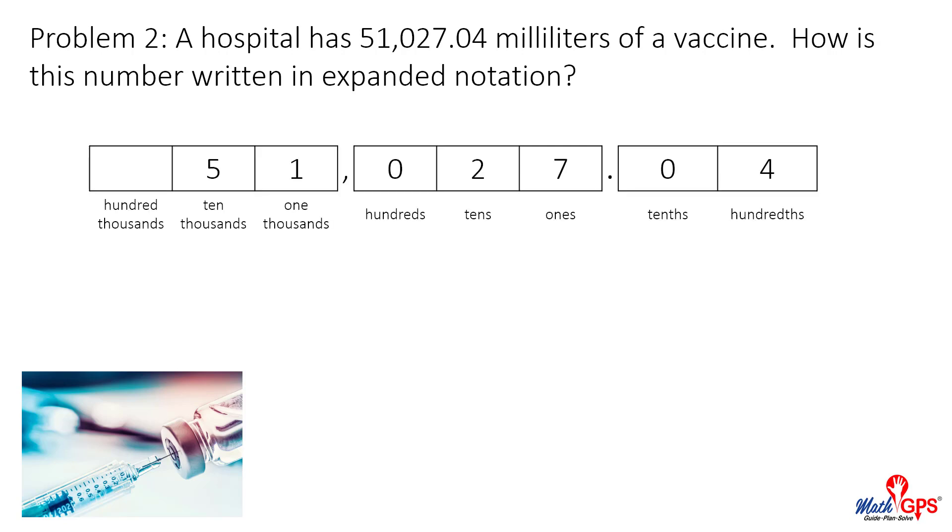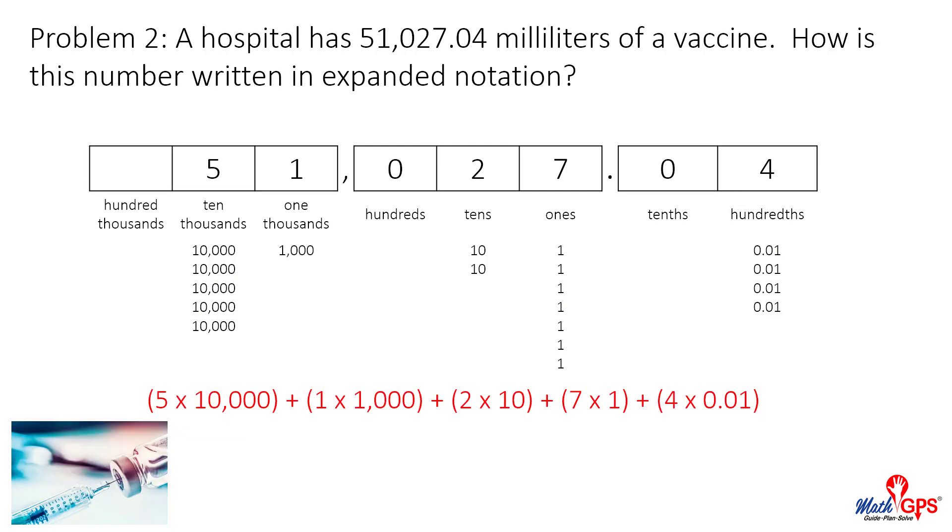The number is shown in a place value model. The value of each digit is shown. Using expanded notation, the value is five times ten thousand, plus one times one thousand, plus two times ten, plus seven times one, plus four times one hundredth.